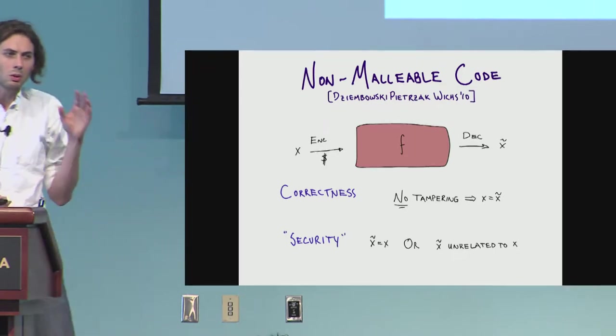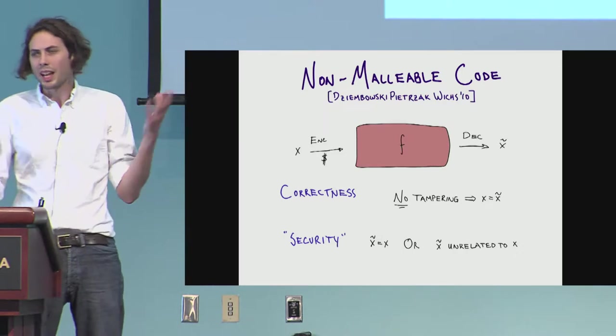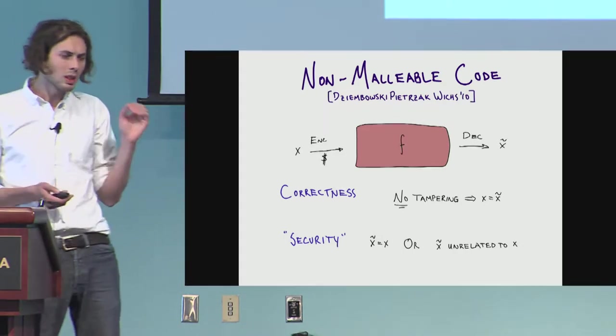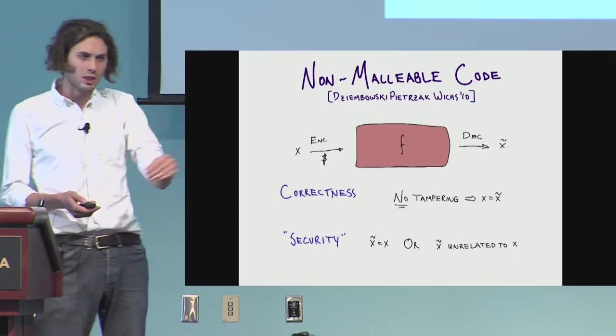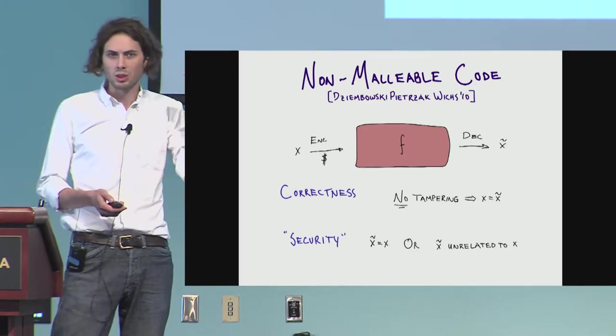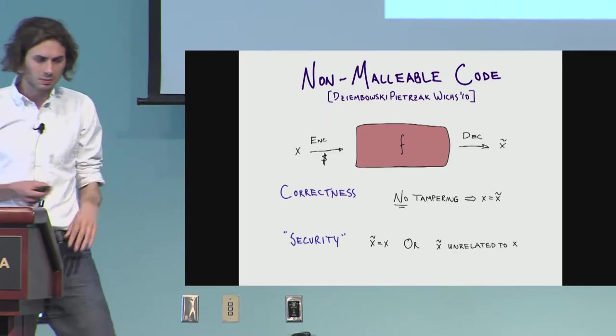What we don't want to happen is this X tilde here, the tampered output is like X plus one or something like this. What we would like instead is that basically all the attacker can do is just delete what you put through the channel and put whatever he wants, something that has nothing to do with the message.